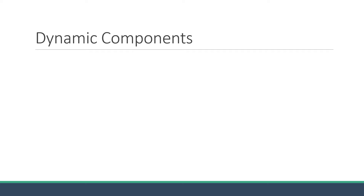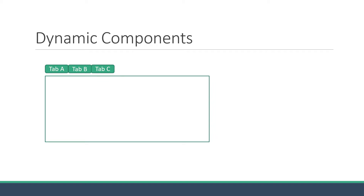In a web application, you might often need to create a tabbed user interface. For example, you would have three tabbed buttons at the top, and below the tabs you would have some content. But the content is controlled by clicking on the individual tabbed buttons. If you click on the Tab A button, Tab A content is displayed. Click on Tab B button, the corresponding content would be displayed, and if you click on the Tab C button, the corresponding content again would be displayed.